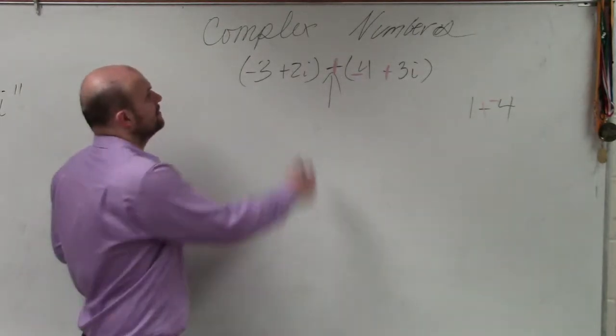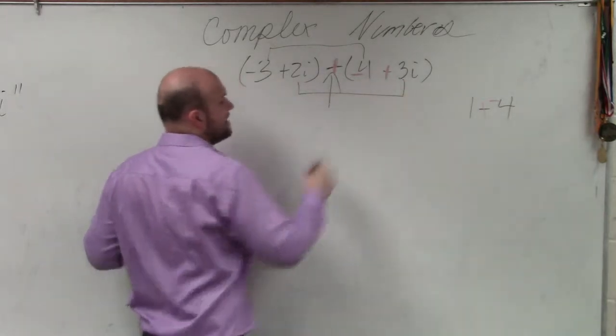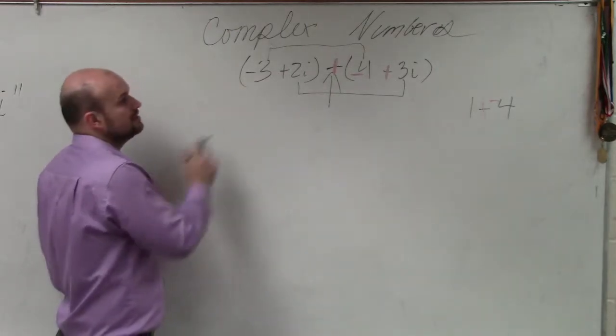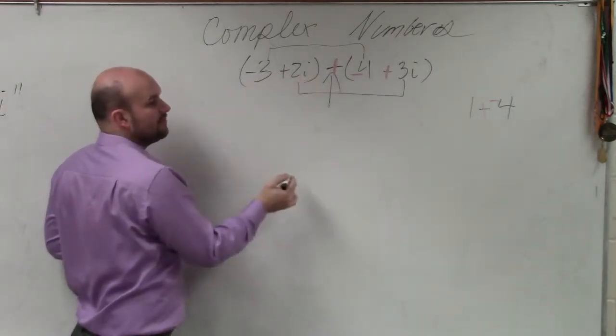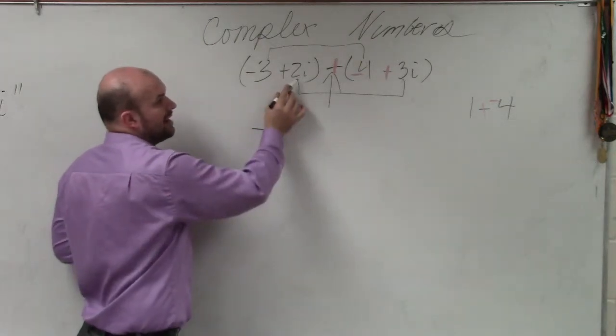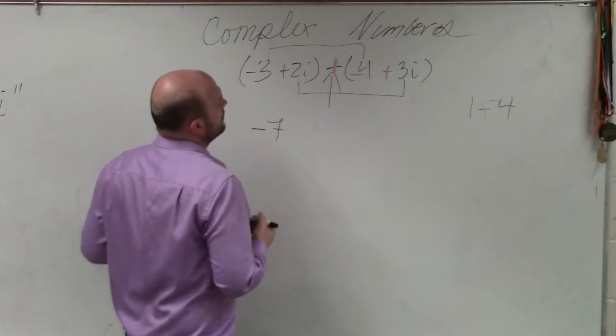So now, I only combine my real and my imaginary. So are you adding or? Well, I changed it to an addition problem. So now it's negative 3 plus negative 4, which is negative 7, and 2i plus 3i, which is 5i.